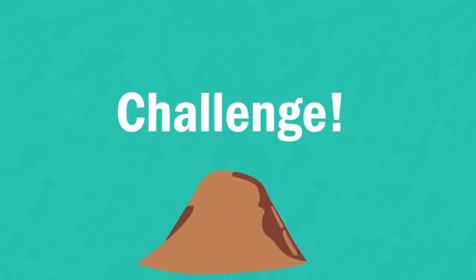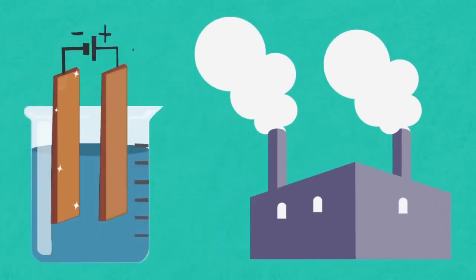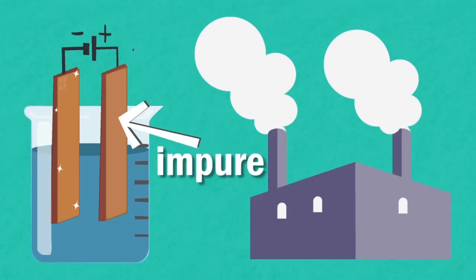Here's a challenge: why do you think that industries might not throw away the anode sludge immediately? Remember the copper strip at the anode is impure. Pause the video and continue when you're ready.